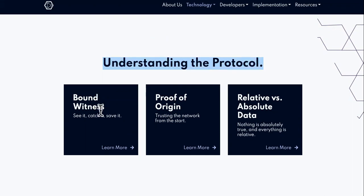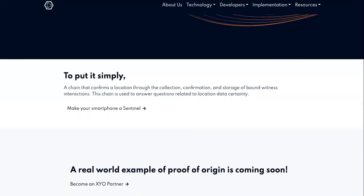So we're going to go through bound witness, we're going to go through proof of origin, and we're going to go to relative versus absolute data. This is the backbone of the XYO Network.